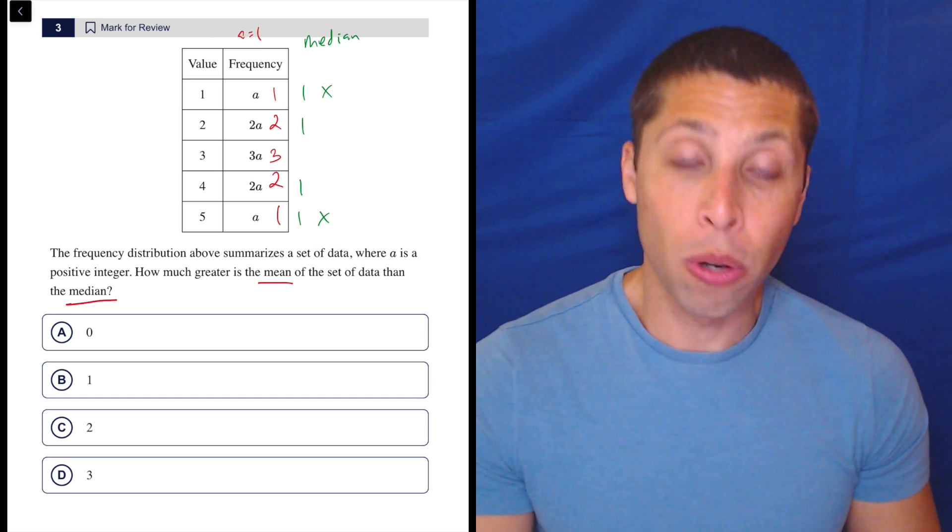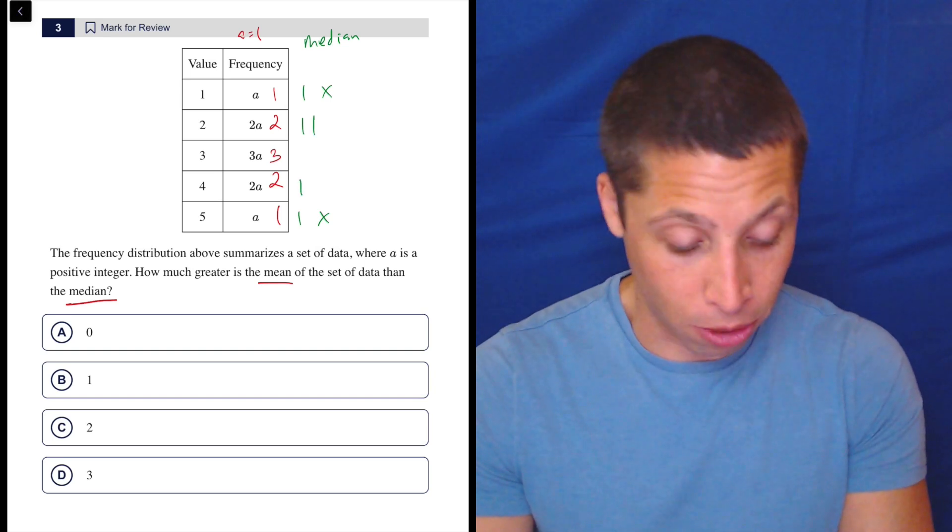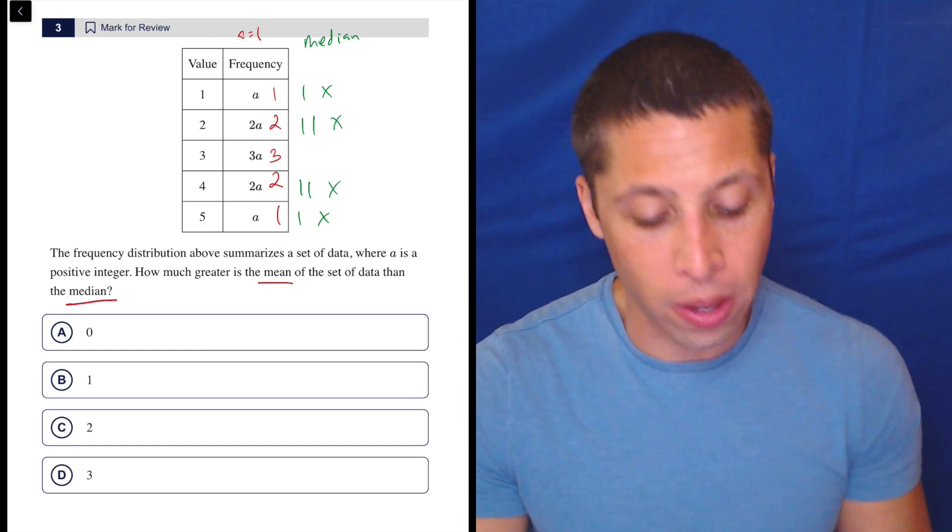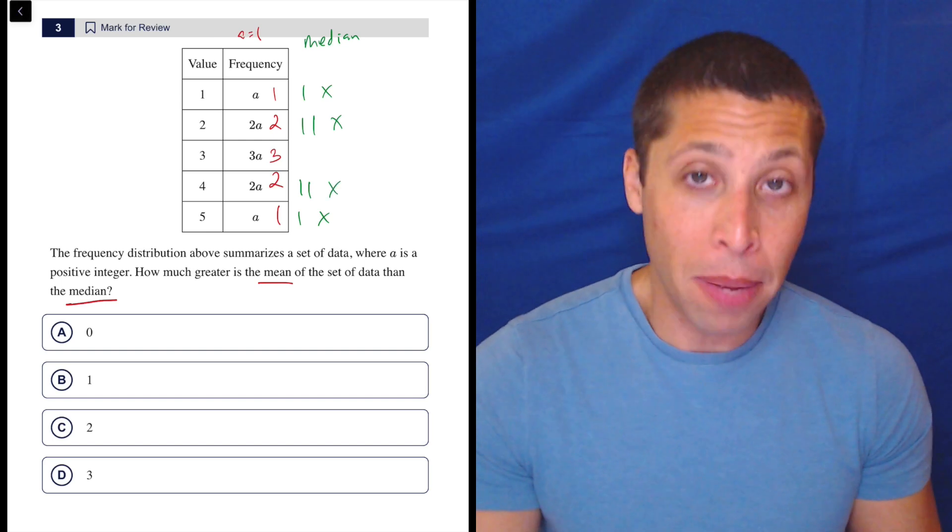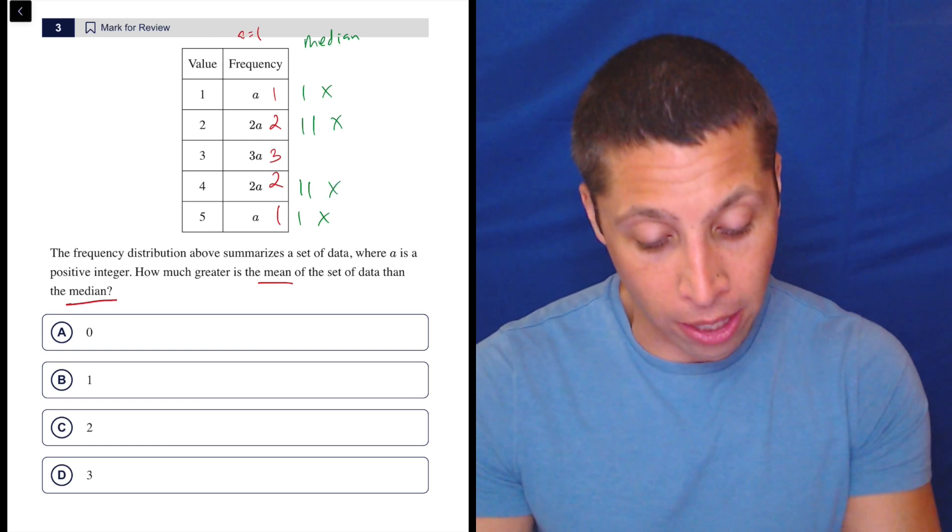And then since there's 2 of each, cross out another 2. That gets rid of that row. Cross out another 4. That gets rid of that row. And now I'm done. My median is 3. So there you go. Median is 3.